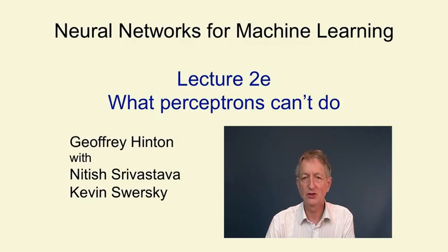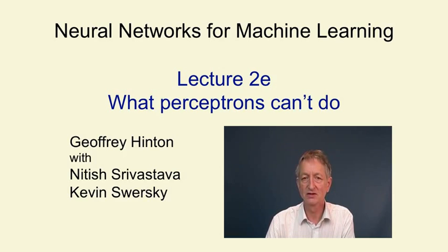In this video, we're going to look at the limitations of perceptrons. These limitations stem from the kinds of features you use. If you use the right features, you can do almost anything. If you use the wrong features, they're extremely limited in what the learning part of a perceptron can do. And that's what caused perceptrons to go out of favour — it emphasises that the difficult bit of learning is to learn the right features.